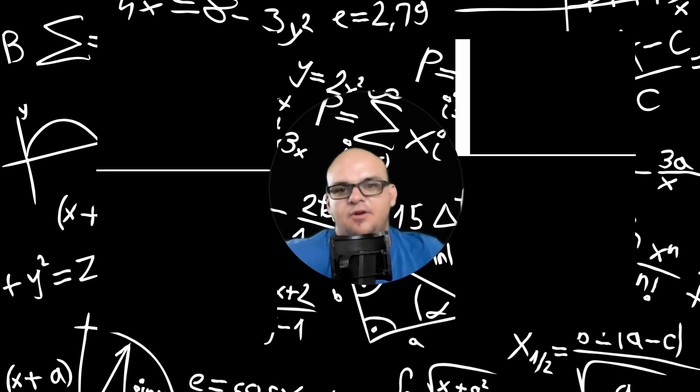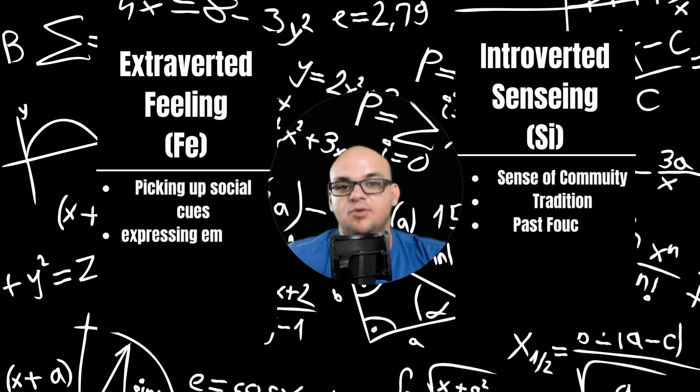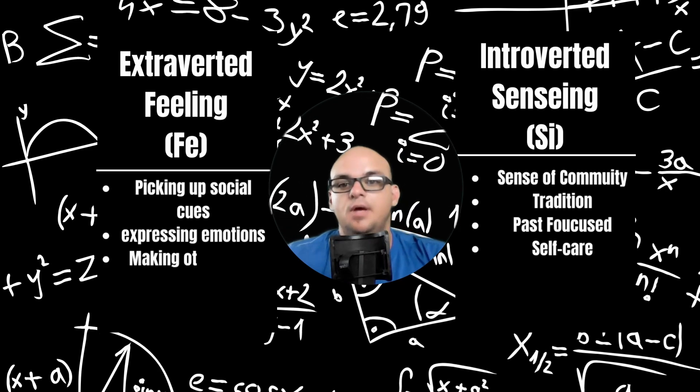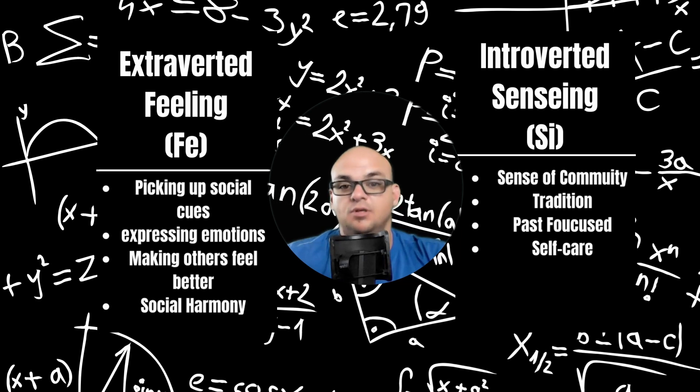So, extroverted feeling and introverted sensing, FE and SI, respectively, are the people-oriented functions. The trickster is a Jungian archetype and when applied to John Beebe's 8-Function model, it's something that we're not socially aware of.